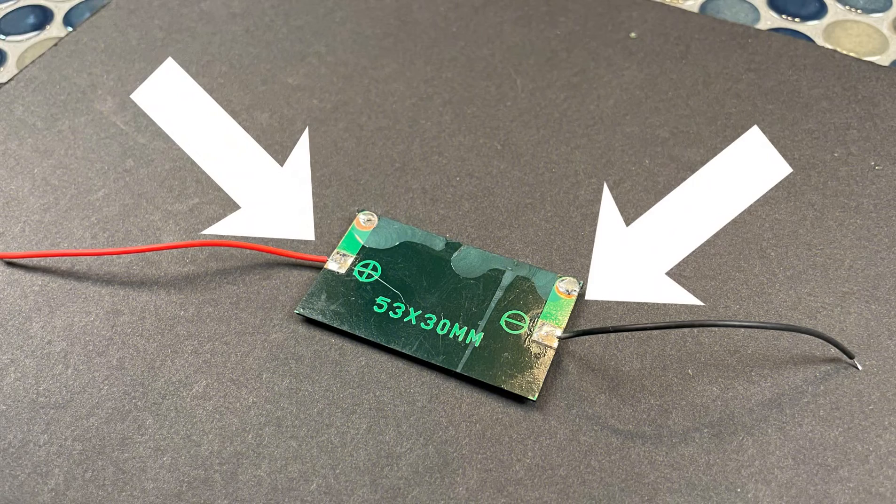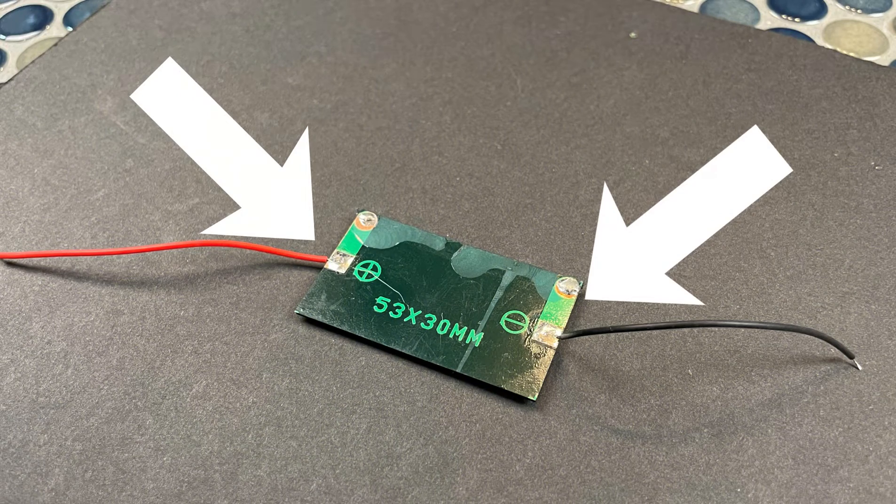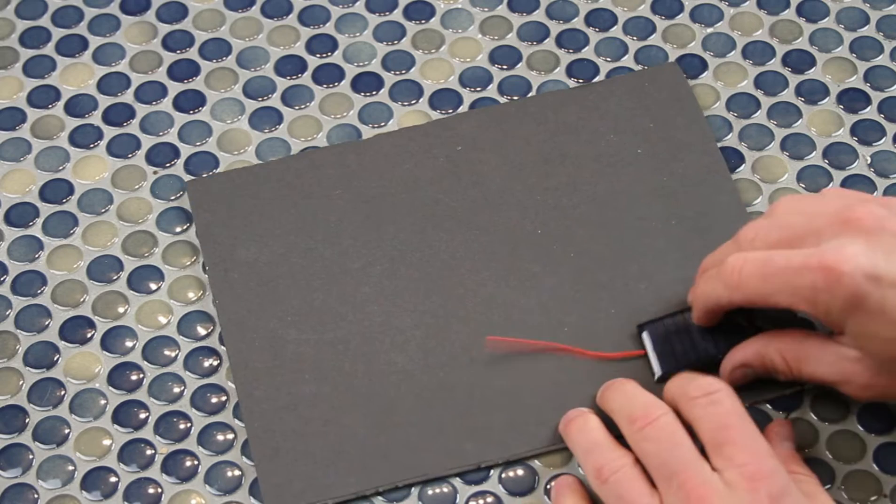We're pausing real quick to show you that the bottom of the panel has a positive and a negative end. The positive is the red wire, the negative is the black.